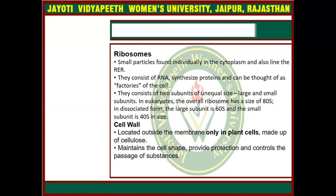The next organelle is ribosomes. Ribosomes are major organelles which have an important role in protein synthesis. They synthesize proteins in the cytoplasm. They are of 70S type, found in prokaryotes, and 80S type, found in eukaryotes. In eukaryotes, the two subunits include the 60S subunit and 40S subunit, according to their sedimentation size.